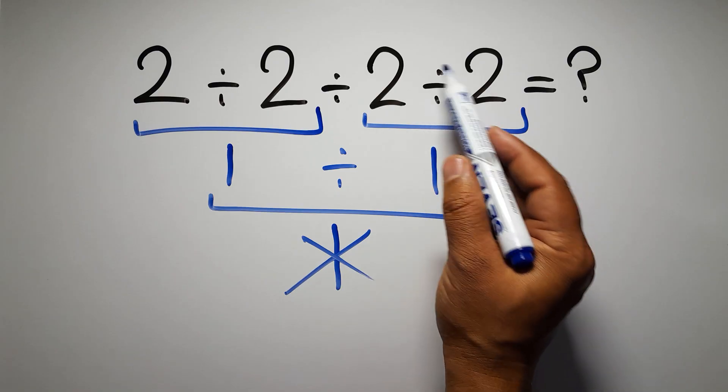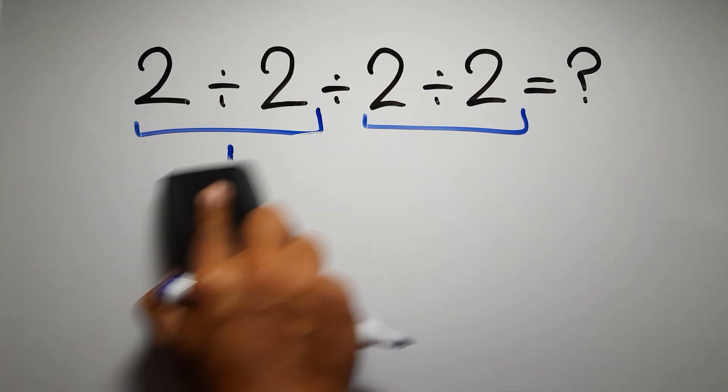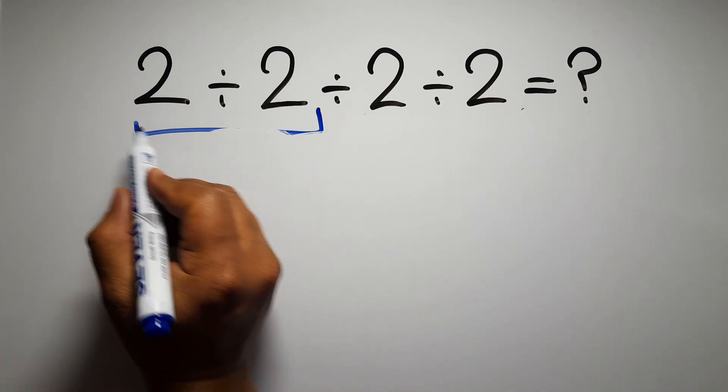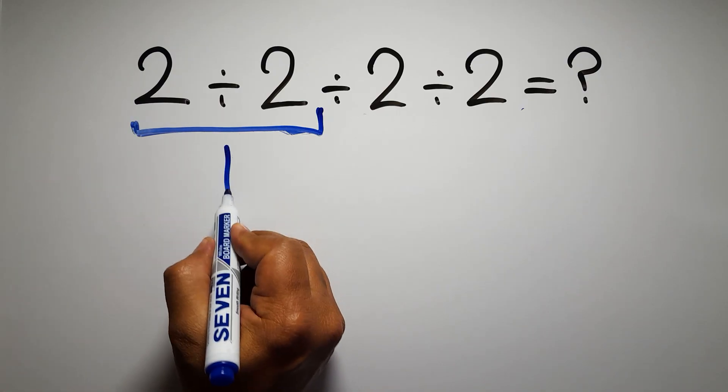If we do this division before this division, it is wrong. So first this division, 2 divided by 2, which equals 1.